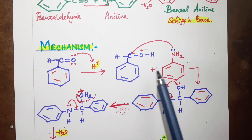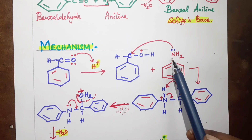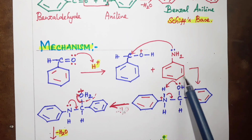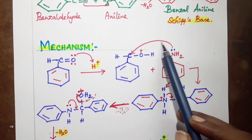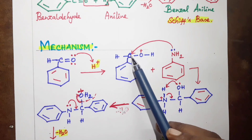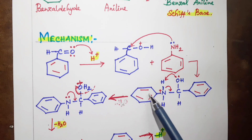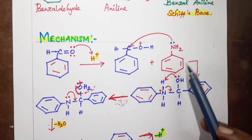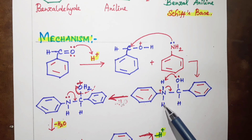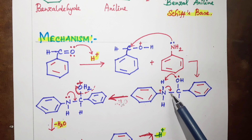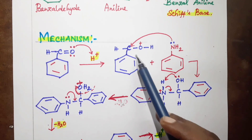This protonated benzaldehyde then reacts with aniline. Aniline has formula C6H5-NH2. The nitrogen of aniline, attached to the benzene ring via N–H bonds, acts as the nucleophile in the next step.